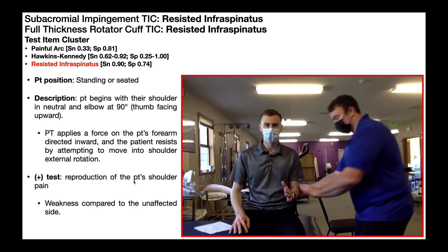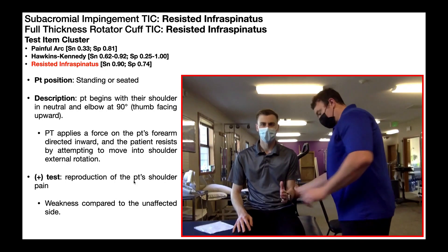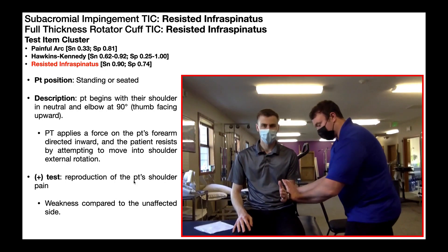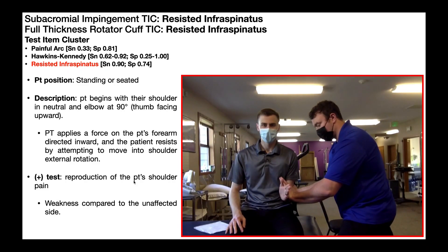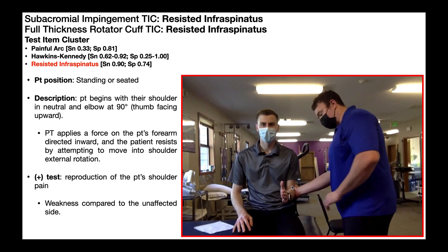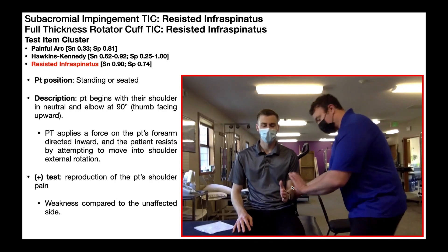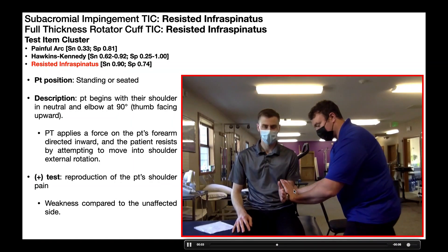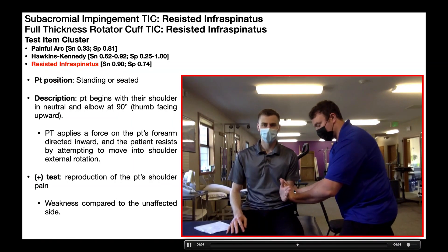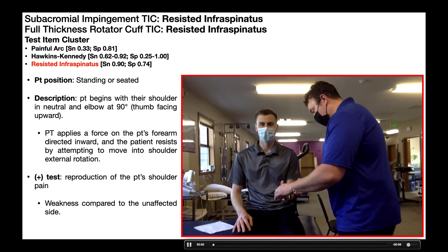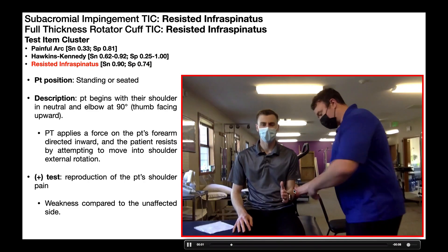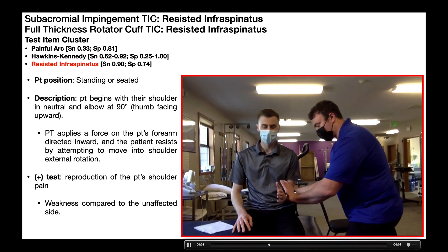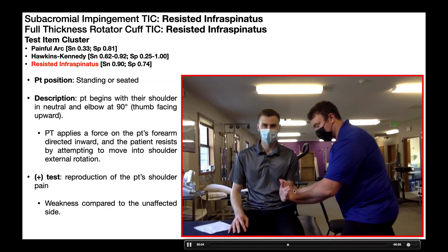Obviously, this would be a negative test because there was no weakness and no pain reported with this force. When you're doing this test, make sure the patient's arm and elbow stays against their side. Sometimes, if there's weakness or extreme pain, they may compensate by allowing their forearm to come in but then their arm flares out.